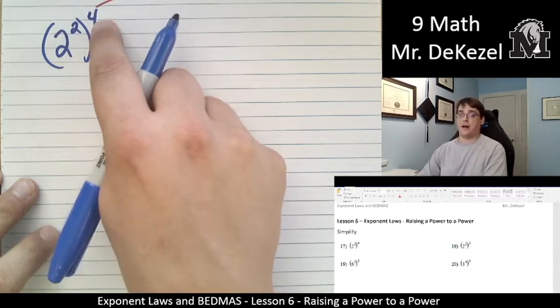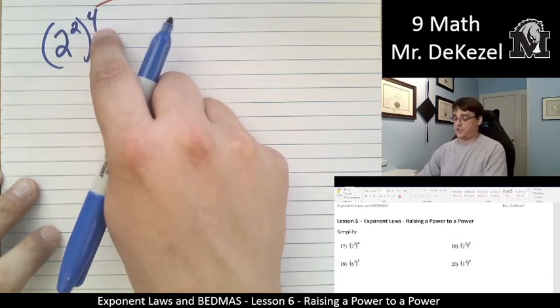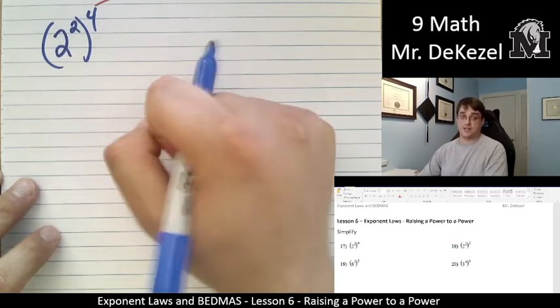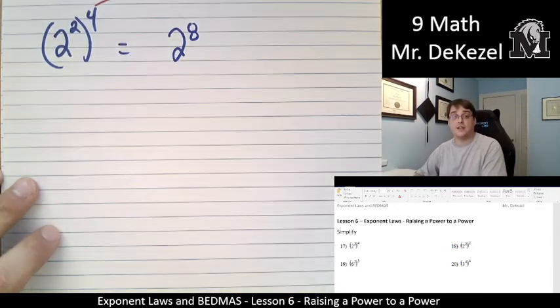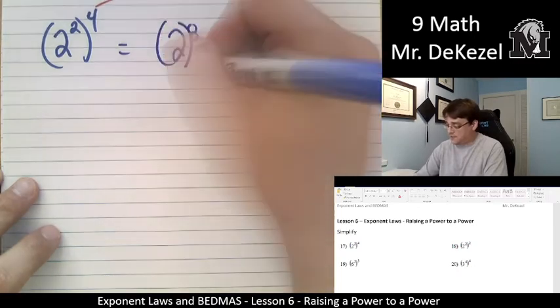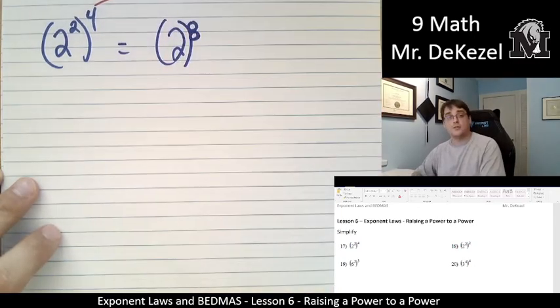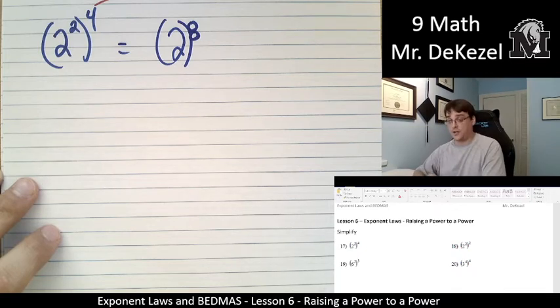So when we have a power raised to a power, we are going to multiply the two powers. So that's 2 times 4, which is 8. So this, simplified, is 2 to the power of 8. I'll put my brackets to make it clear. 2 to the power of 8. So when you have an exponent of an exponent, you multiply.